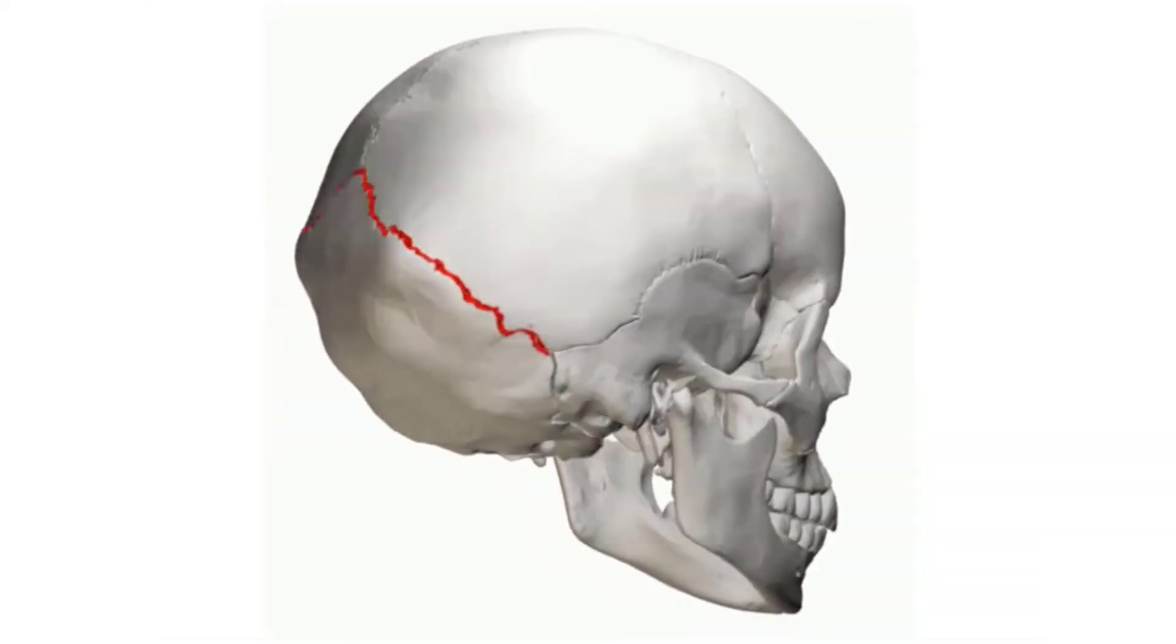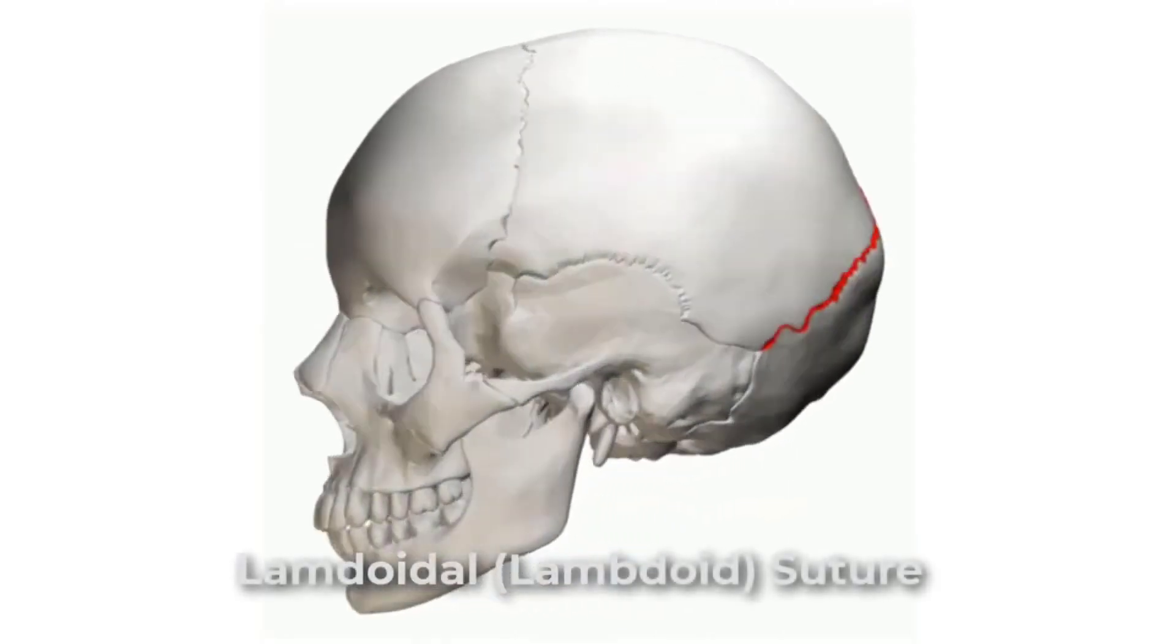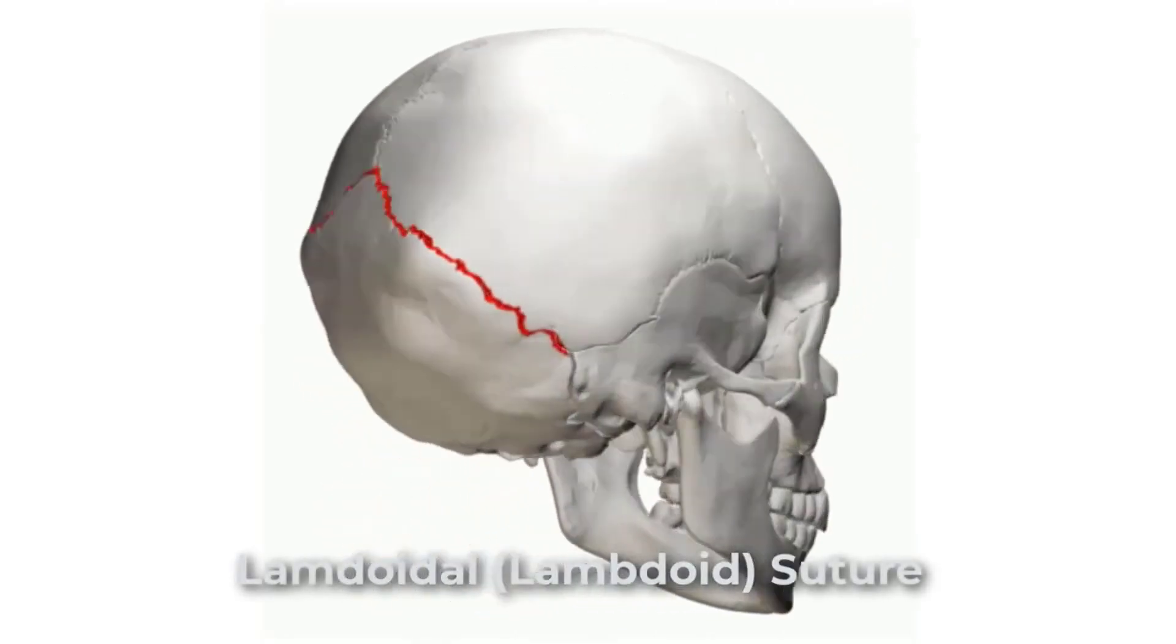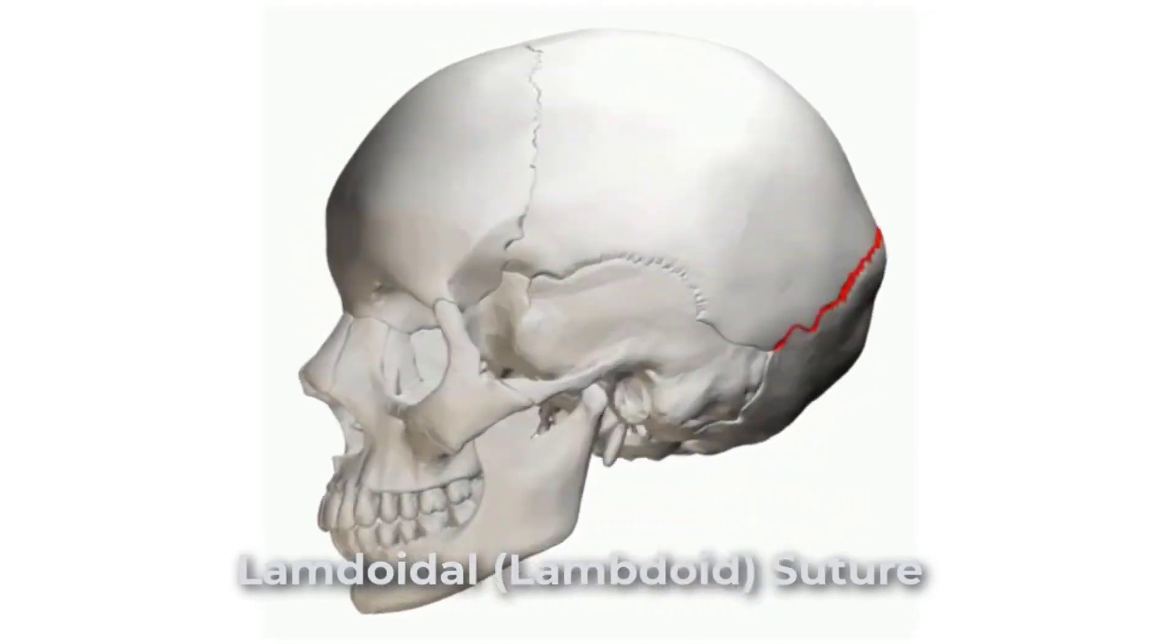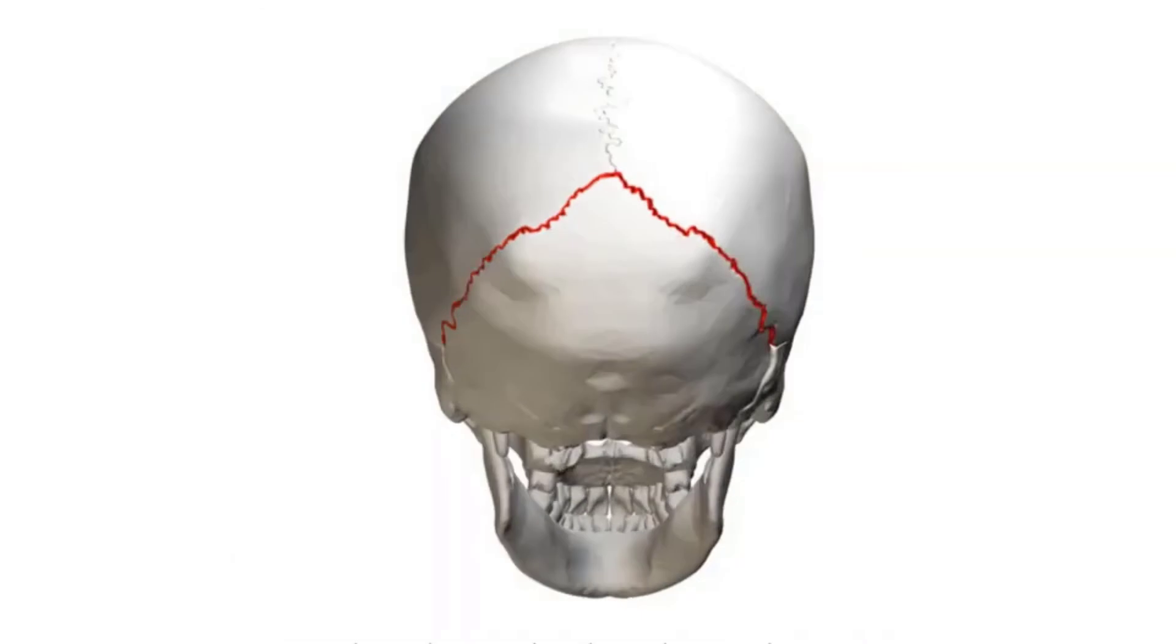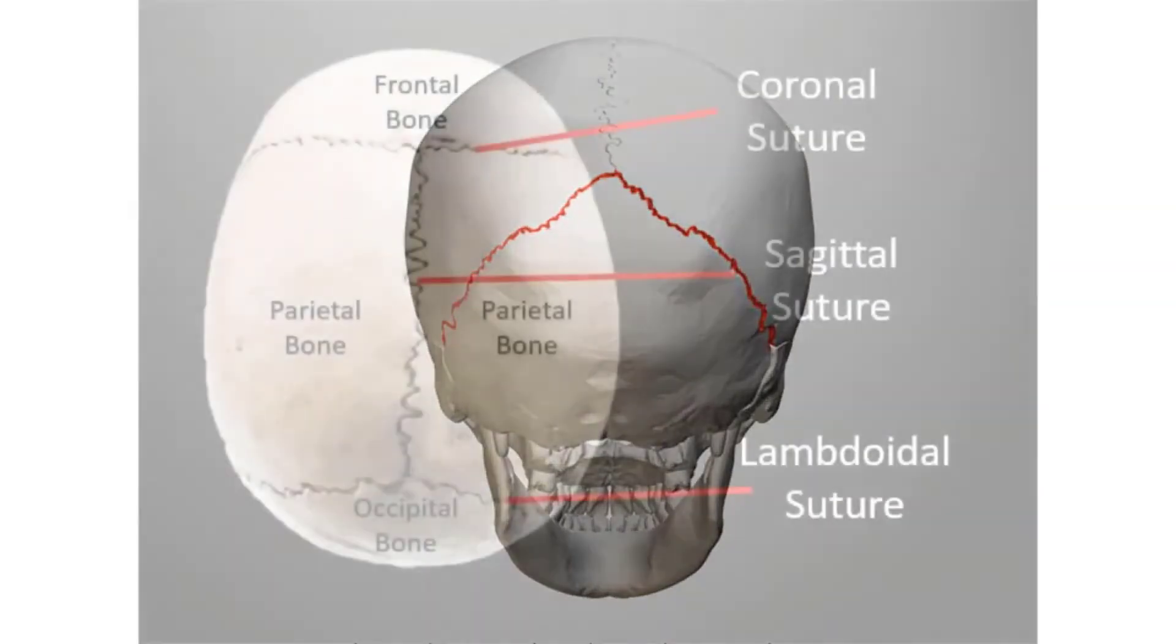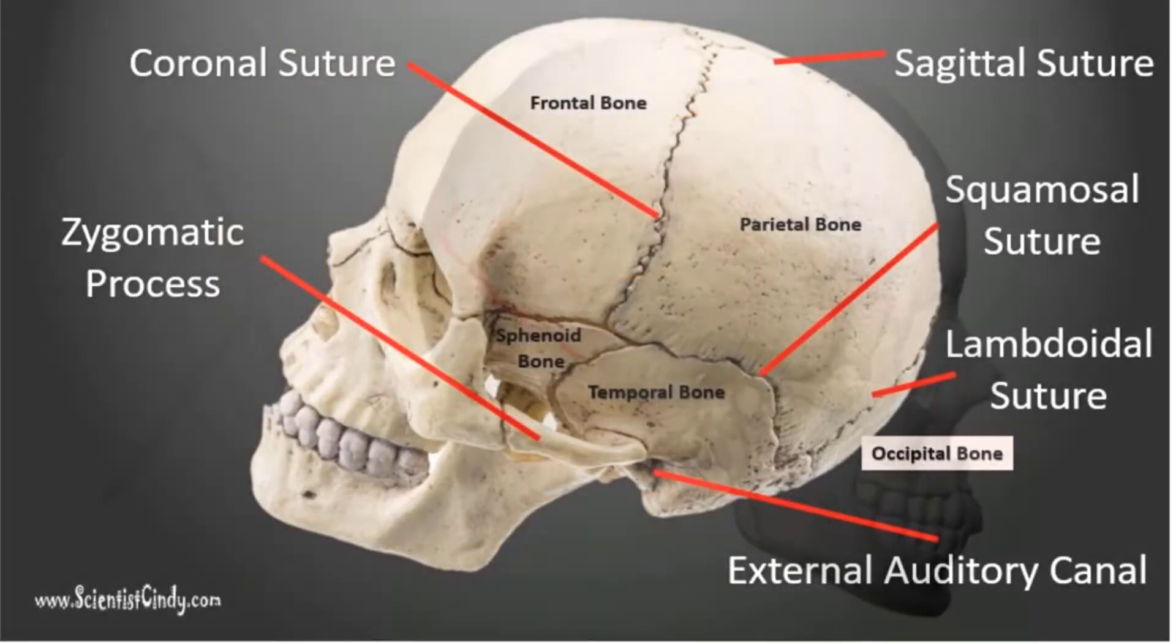On the posterior skull, the sagittal suture terminates by joining the lambdoidal suture. The lambdoidal suture extends downward and laterally to either side away from its junction with the sagittal suture. The lambdoidal suture joins the occipital bone to the right and left parietal bones and the temporal bones. This suture is named because it resembles the Greek letter lambda.